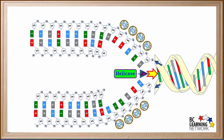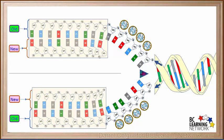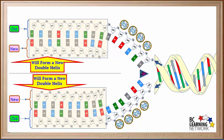The helicase will continue to unwind the double helix on the right, exposing more bases so the new strands will continue to grow in length. The old and new sections will form two new double strands. And these new double strands will eventually coil up and form two new double helices.